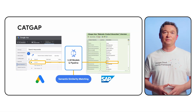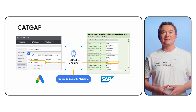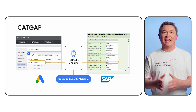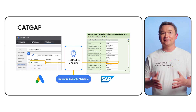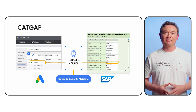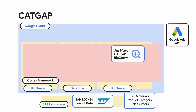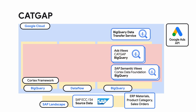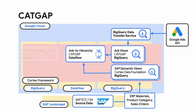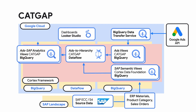With the help of large language models, it runs semantic similarity matching for closing the attribution gap between ads performance and product sales, then getting quick insights into individual campaigns' effectiveness. CADGAP is deployed as a Cloud Dataflow pipeline on top of Data Foundation SAP views and BigQuery Data Transfer Service for Google Ads. This Dataflow pipeline is an example of leveraging the Run Inference transform with a custom machine learning model.